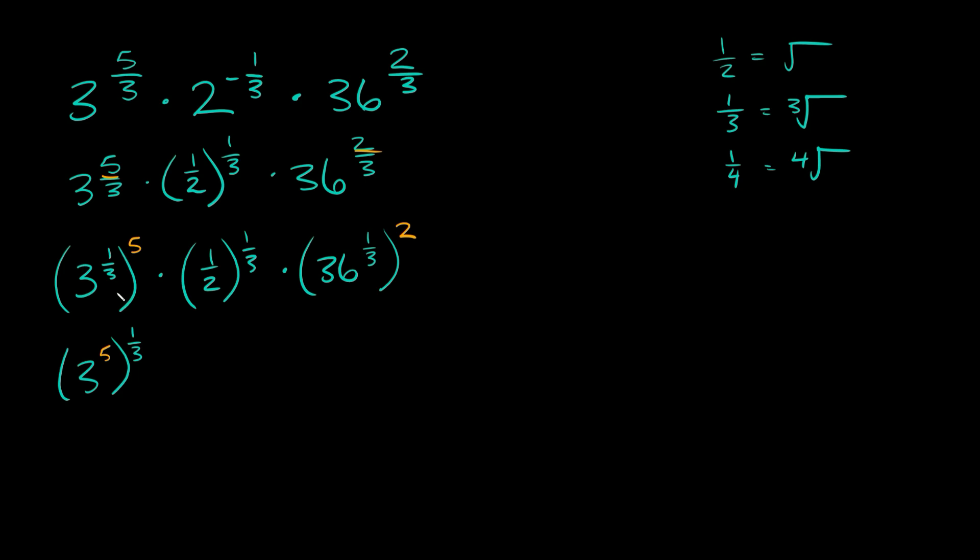But with multiplication the order doesn't matter, 1 third times 5 is the same thing as 5 times 1 third. And I specifically want to flip those two because, as you can see, I have a third out here. So I have a third on the outside and a third on the outside. So then I can do the same thing over here to get the 1 third on the outside. So then here we're going to have times 1 half raised to the 1 third times 36 raised to the 2nd power raised to the 1 third.